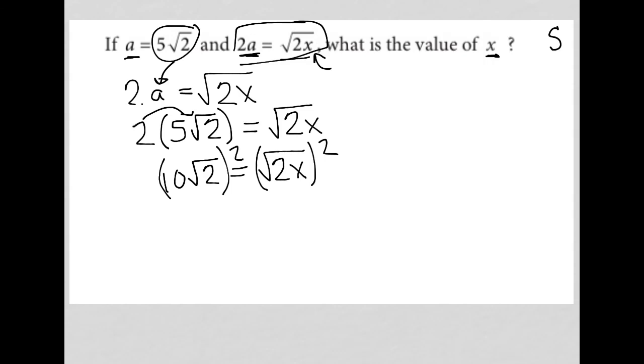10√2 squared is the same as 10 squared times √2 squared, which would be 100 times 2, which is 200. And then the square root of 2x just becomes 2x.